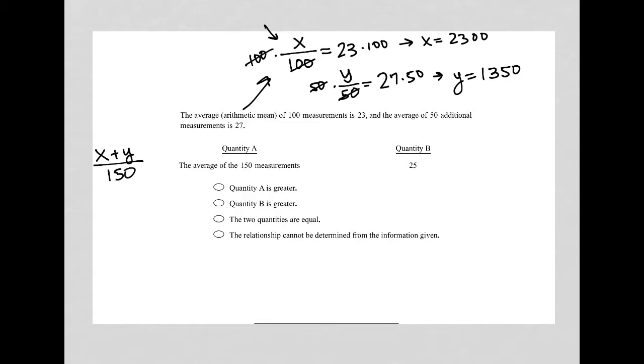Like that is how I answer that question. So because I did some work before looking at the answers here, or before looking at quantity A here, I know that x is 2,300. And I know that y is 1,350. So I'm just adding those together, dividing by 150, which turns into 3,650 over 150. And then I throw that into my calculator, which you'll have an on-screen calculator for this test. And I get 24.33 like this.